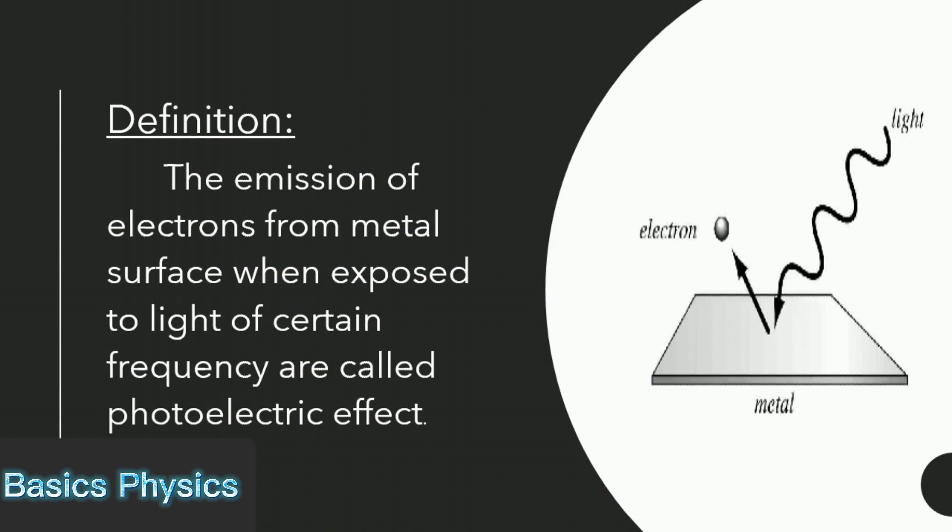When electromagnetic radiation such as x-rays, gamma rays, and infrared light fall on metal surface, it emits electrons.